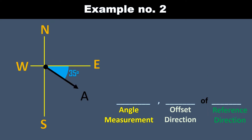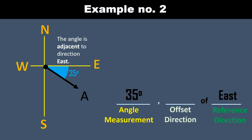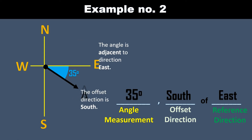Let us try another example. The given angle is 35 degrees. The 35-degree angle is adjacent to the east direction, so we place the word east on the third blank for the reference direction. The angle is turning towards south, so we place south on the second blank. So the angle is read as 35 degrees south of east.